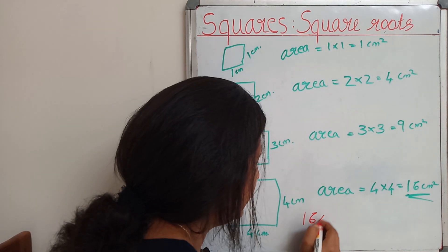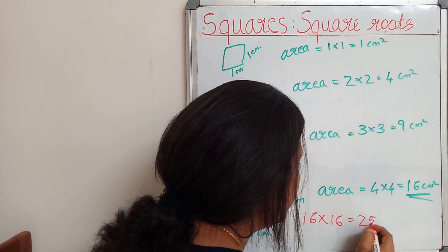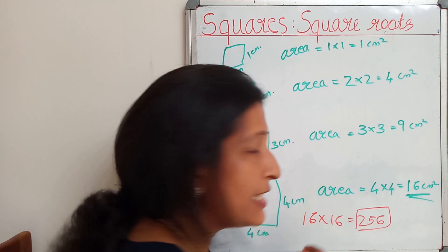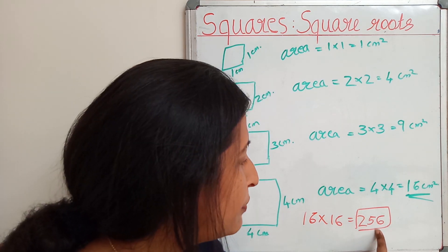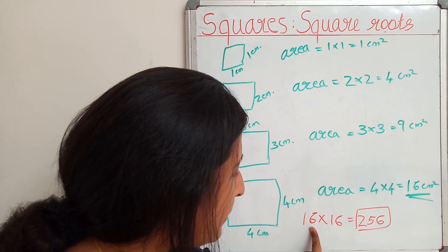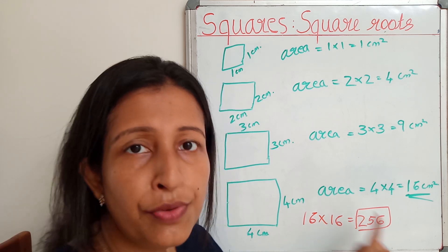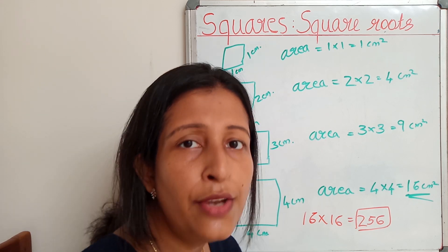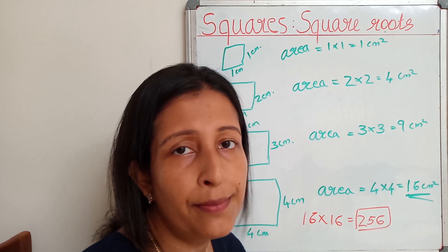For example, 16 x 16 = 256. So 256 is a square number. 256 can be expressed as the product of a number by itself. Like this way, you can find out many square numbers for your exam.